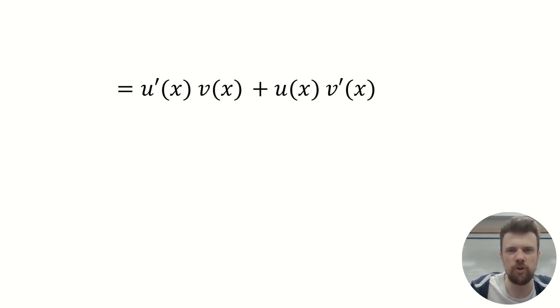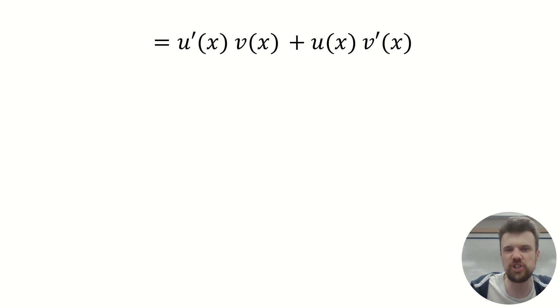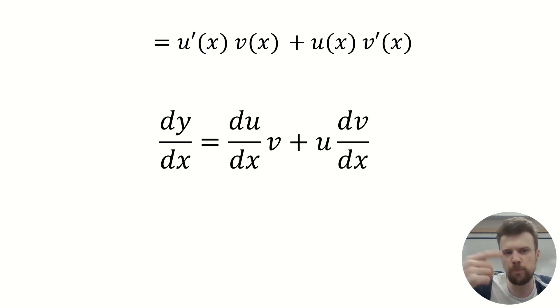And what do you know? This is just the product rule because the u prime is effective du over dx, converting back to derivative notation. v of x is just v, u of x was just u, and then v prime of x was just the derivative of v, dv over dx. And we've done it. That is the proof behind product rule, and that's why it works.